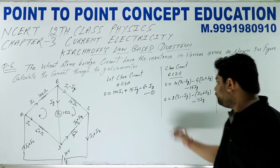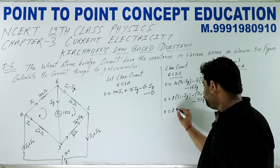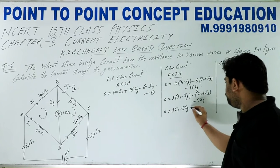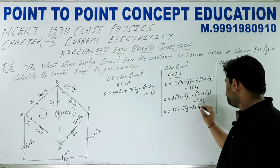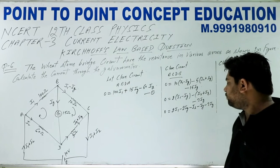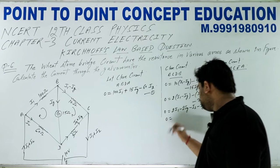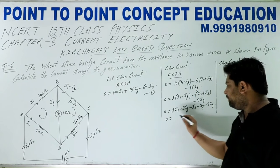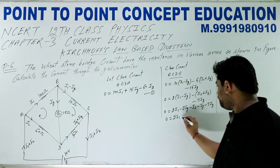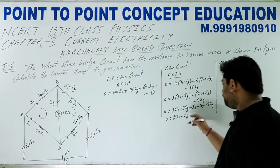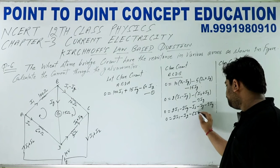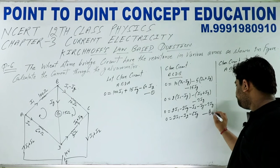इसे solve कीजिए। 10, 5, 15 — equation को simplify करो, 5 से divide कर दो। तो यह हो गया: 2(I1 - IG) - I2 + IG - 3·IG = 0। Solve कीजिए: 2·I1 - 2·IG - I2 - IG - 3·IG = 0, जो होगा 2·I1 - I2 - 6·IG = 0। यह है Equation number 2।